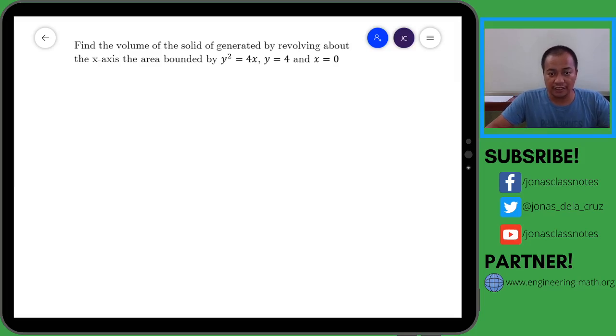Hello, so this is an example of the washer method. We are going to find the volume of the solid generated by revolving about the x-axis the area bounded by y squared equals 4x, y equals 4, and x equals 0. Okay, so first let us sketch the graph of the given equations.